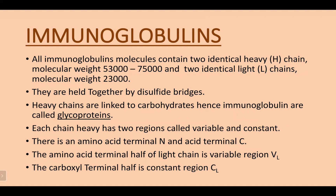Now we have studied about immunity and its various types: innate and acquired. The acquired is further classified into two types, passive immunity and active immunity. Now we will study about immunoglobulins and antibodies.